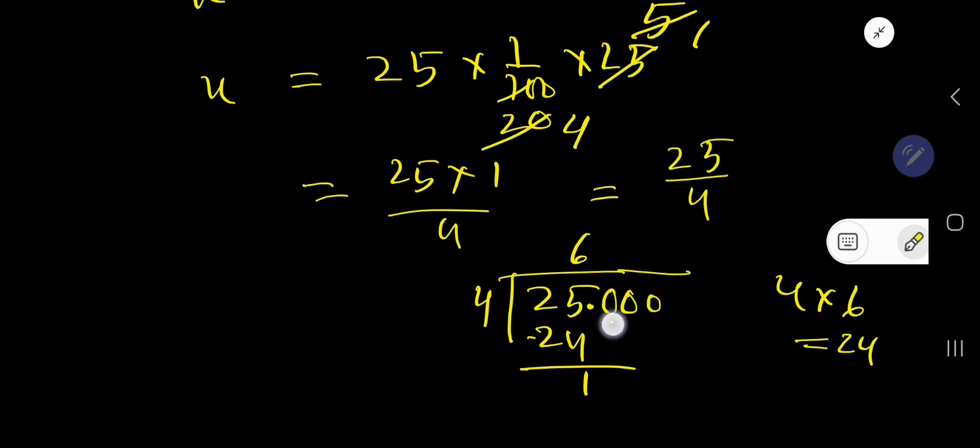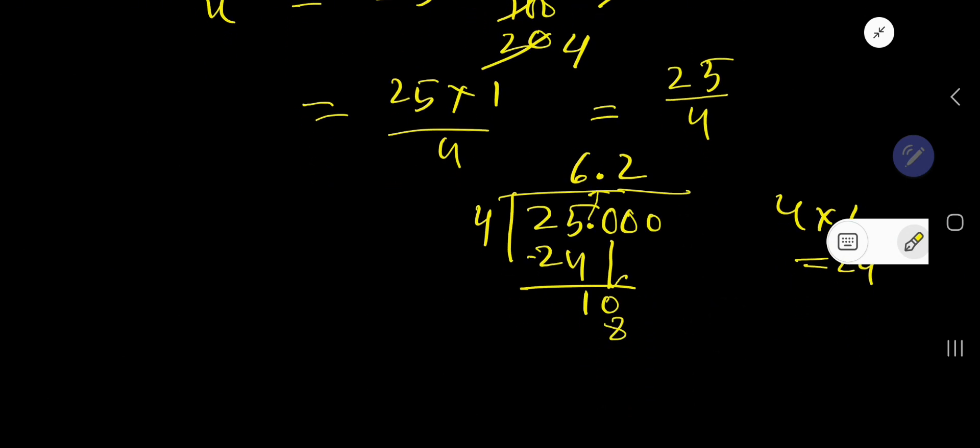Bring down the first 0 here. This decimal point will come directly to the quotient. So 4 goes into 10, 2 times. 2 times 4 is 8. If you subtract then you have to bring down this 0.